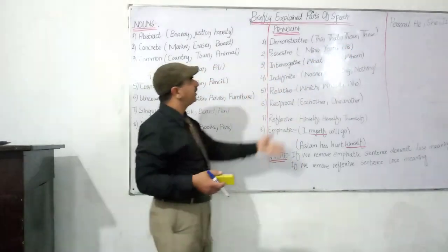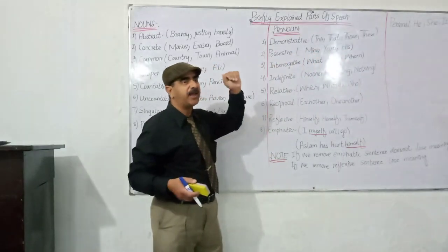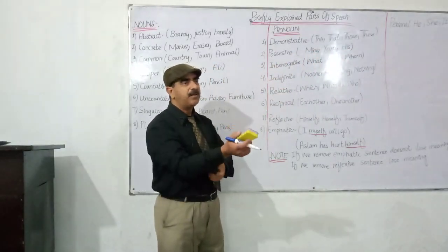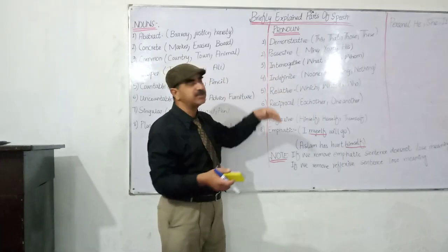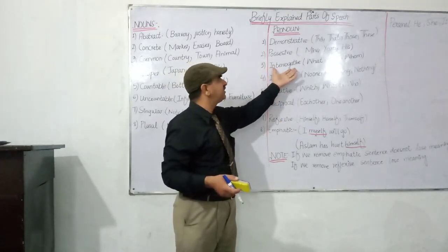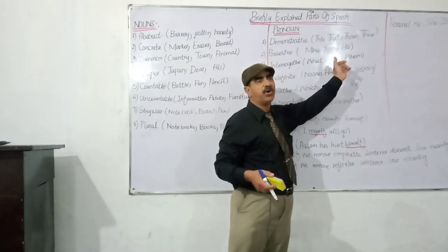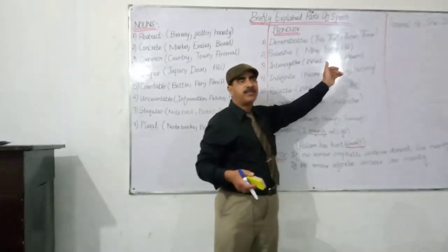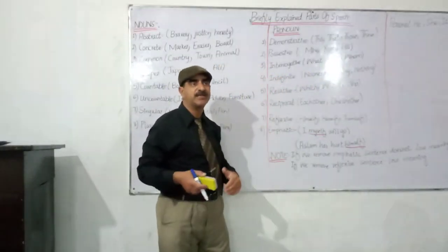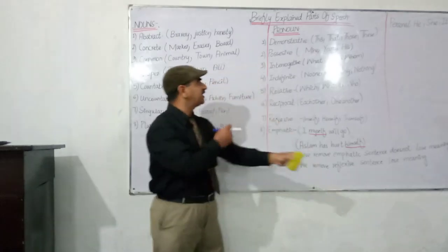Next are possessive pronouns: mine, yours, his, hers. My, her, his are also possessive pronouns. Then there are interrogative pronouns: what, who, whose, whom — they are interrogative pronouns because they come at the beginning of the sentence.